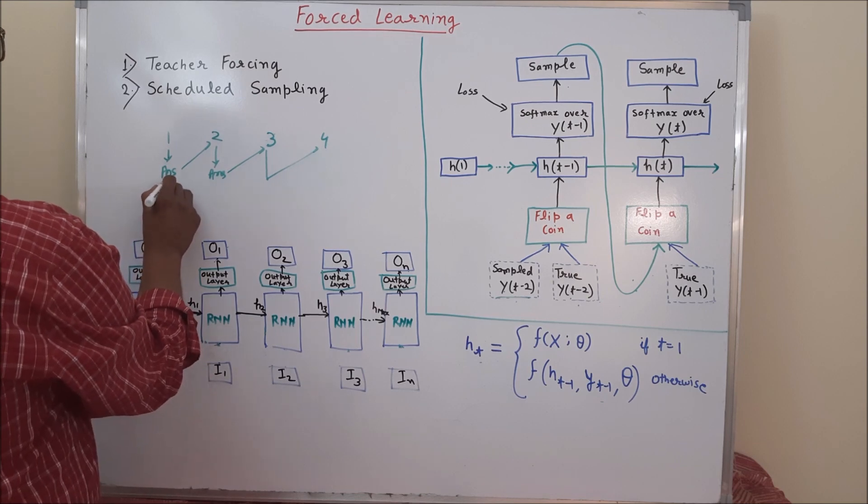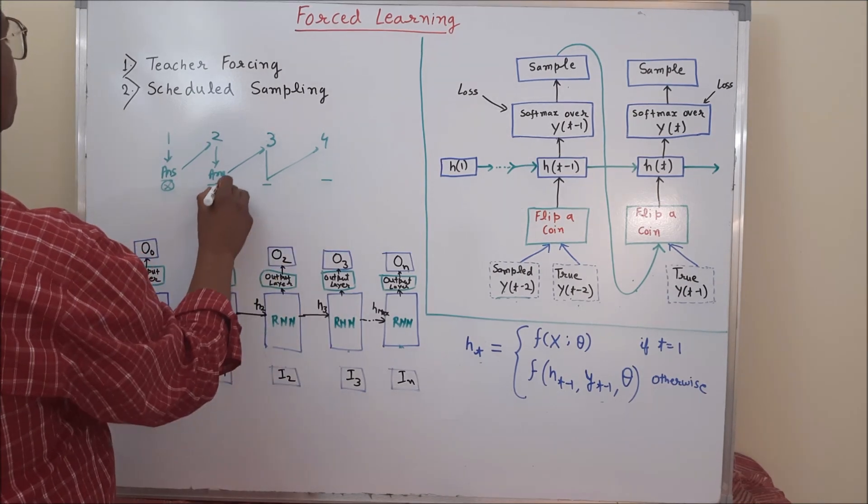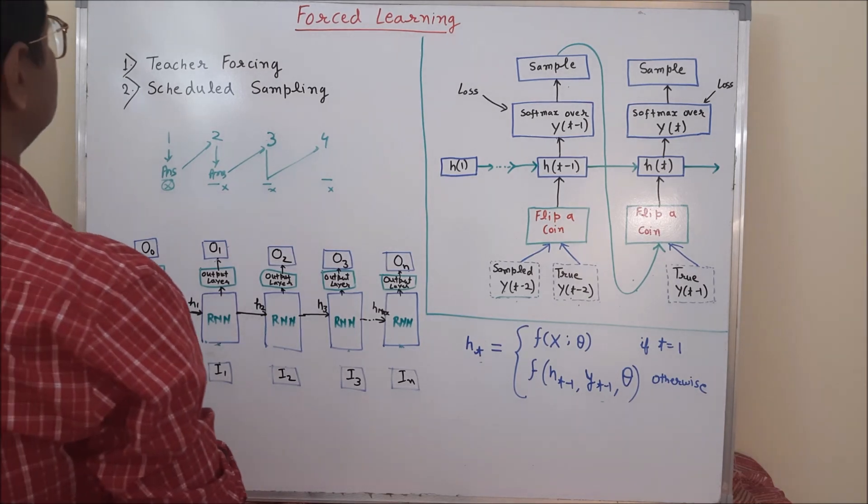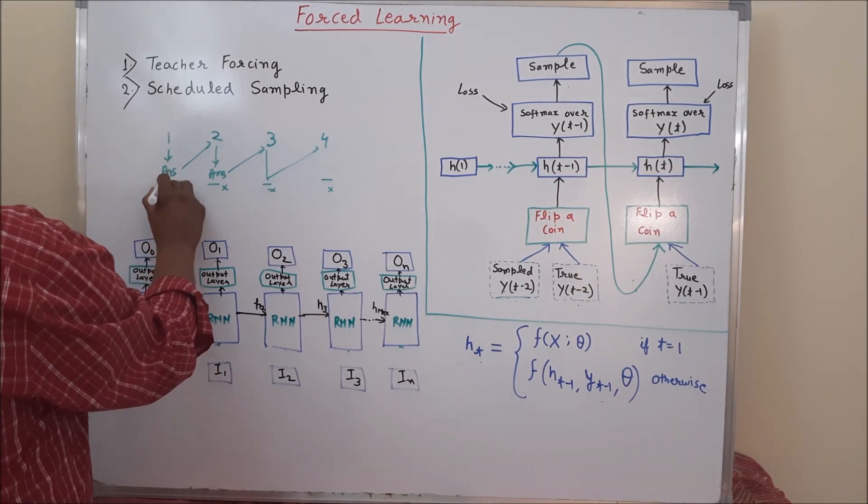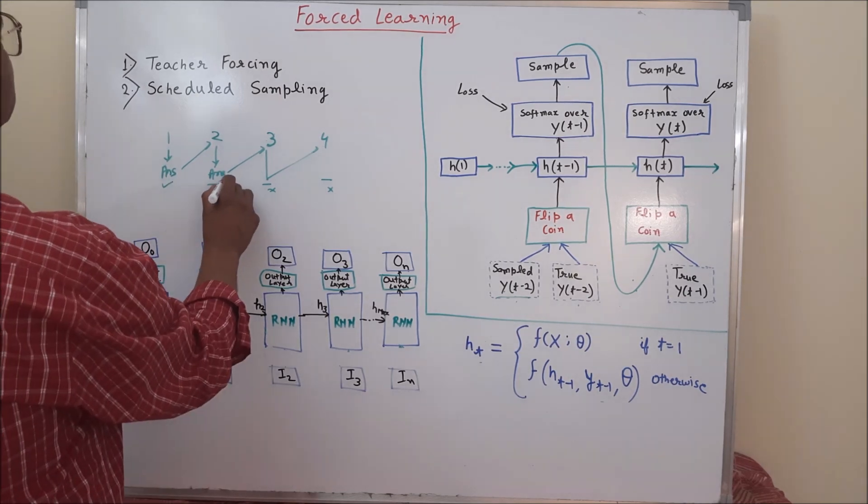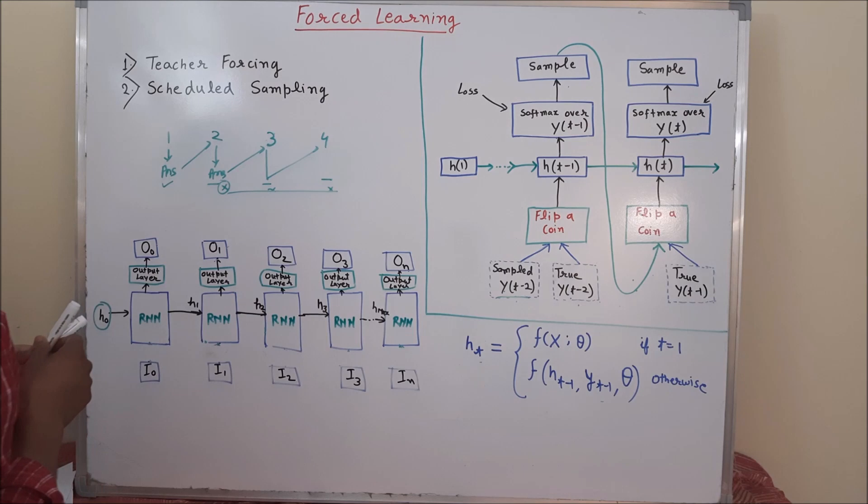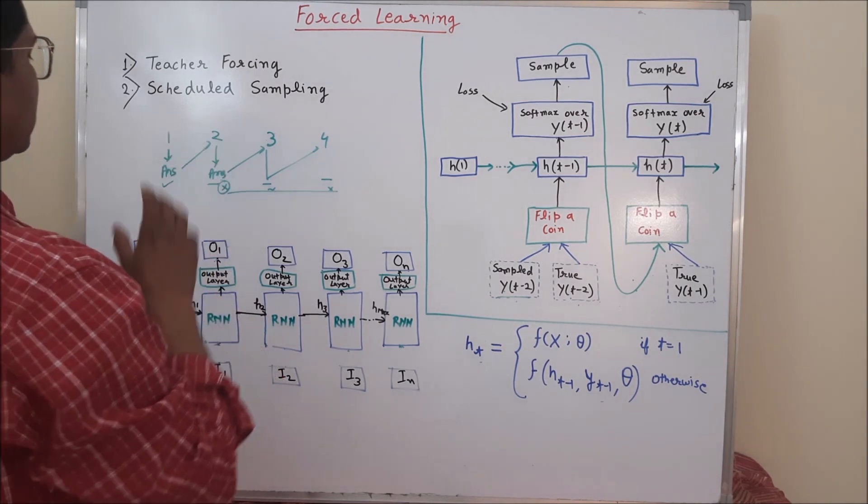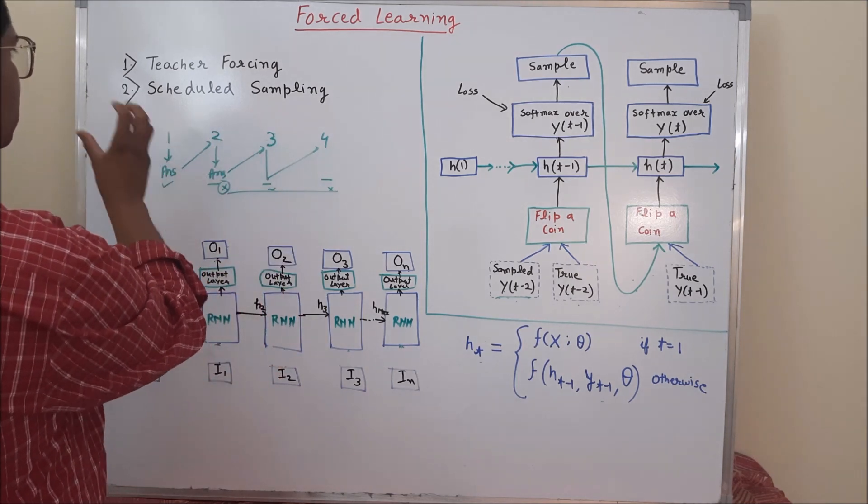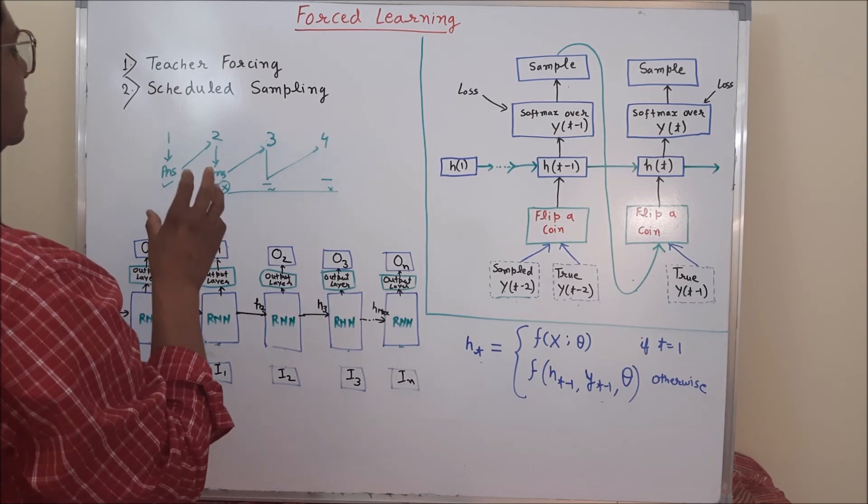Now, suppose by mistake, you wrongly answered question number 1. Your all answers will be wrong and your all effort will be useless. Now, suppose you made first answer correct but second answer wrong. So, the answer of all remaining questions will be wrong. Such kind of dependencies where the answering of some questions will depend upon the correct answer of previous questions require some special attention.